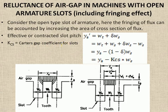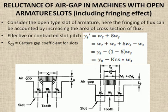In the previous open-slot case, fringing was not taken into consideration. In this case, fringing has also been taken into consideration. Comparing with the previous case, the effective slot pitch OS' has been increased — not the slot pitch itself, but the effective slot pitch. In the previous case, OS' was equal to WT. It is recommended to draw this diagram and note all these relations. In the next slide, we will study how to find Carter's gap coefficient for slots.